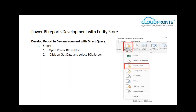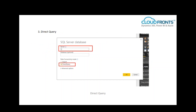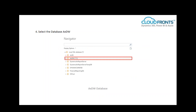Now let's proceed to Power BI report development using Entity Store. Develop reports in the dev environment with Direct Query. Steps: Open Power BI Desktop, click Get Data and select SQL Server. On opening the tab, select the local database, click Direct Query, and proceed to OK. Select the AXDW database — as previously mentioned, AXDW is your entity store. Navigate to AXDW, select the dimensions and aggregate measure, and develop the report. Save the report with an appropriate name and upload it to your LCS project asset library under Power BI.